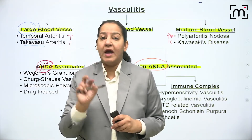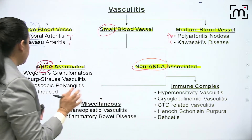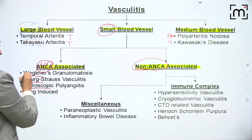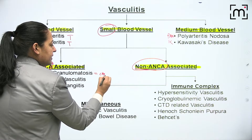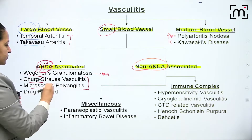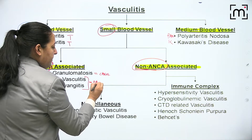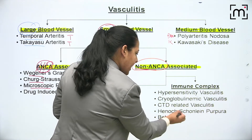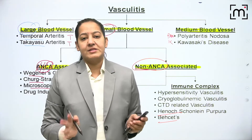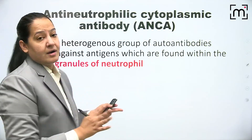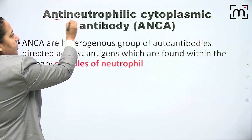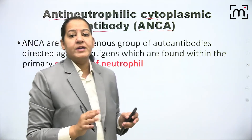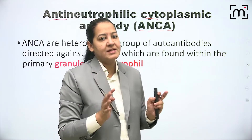ANCA-associated small vessel vasculitis is further divided into p-ANCA and c-ANCA types. Wegener's, Churg-Strauss, and microscopic polyarteritis are ANCA positive - Wegener's is c-ANCA positive, while Churg-Strauss and microscopic PAN are p-ANCA positive. In non-ANCA associated vasculitis, the most important are Behcet's disease and Henoch-Schönlein purpura.